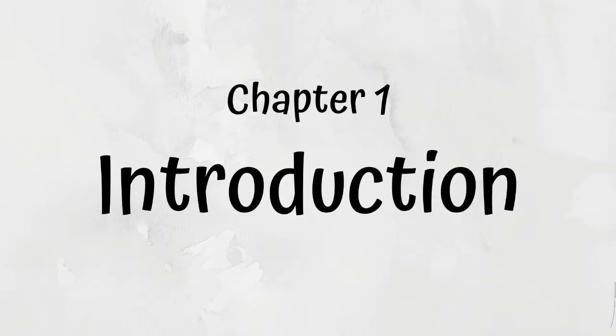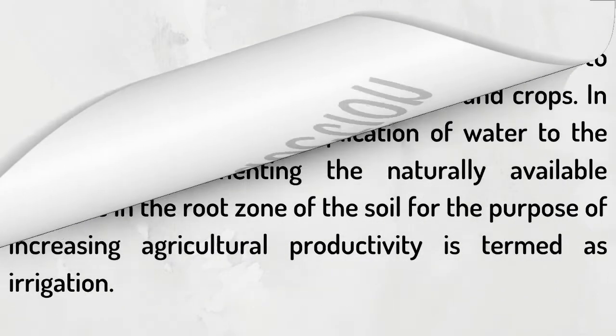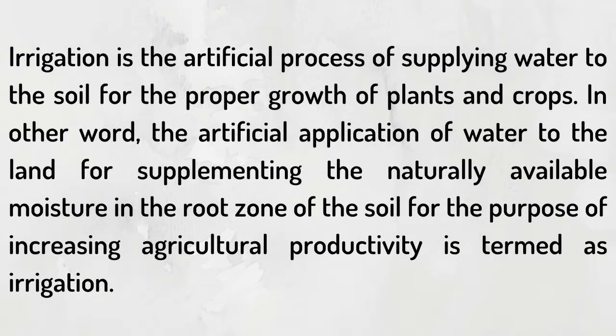Chapter 1 Introduction. Irrigation is the artificial process of supplying water to the soil for the proper growth of plants and crops. In other words, the artificial application of water to the land for supplementing the naturally available moisture in the root zone of the soil, for the purpose of increasing agricultural productivity, is termed as irrigation.